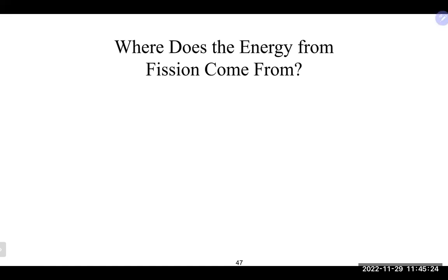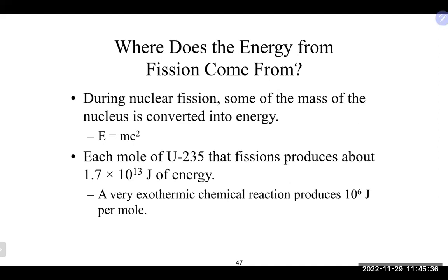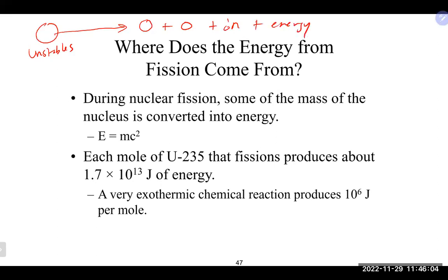Now we're going to talk about where the energy from fission comes from. Fission is the idea that an unstable nucleus decays — it breaks apart into two new nuclei, usually generates some neutrons along the way, and gives off a lot of energy. So the process of fission is basically: something unstable decays, breaks apart into new nuclei, gives off neutrons and energy.